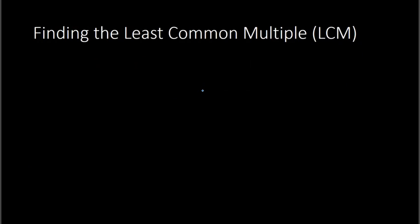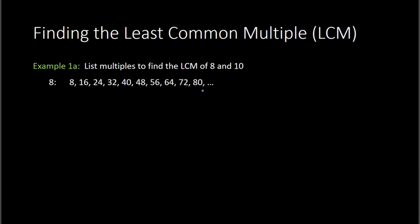So to find the least common multiple, here we have 8 and 10. We can list multiples, like we did in the last slide, to find the least common multiple of 8 and 10. Looking at 8: 8 times 1 is 8, 8 times 2 is 16, 24, 32, 40, etc. Those are all multiples of 8. Multiples of 10 would be 10, 20, 30, 40, 50, 60, etc. The least common multiple — the smallest one they both have in common — would be 40. Therefore, the LCM equals 40.